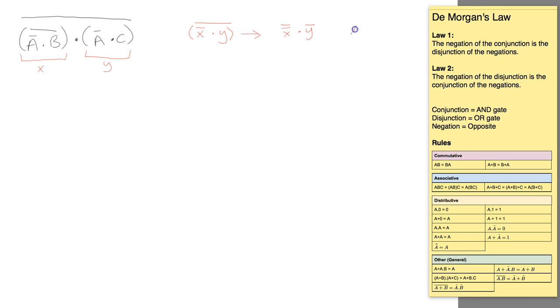So by applying the not not A equals A rule, we can then simplify this and say okay, so it's just X or not Y. So that's what we're going to try and achieve first of all.